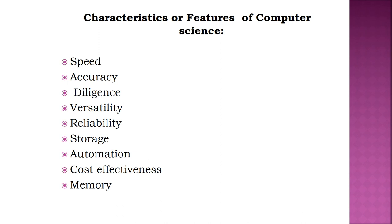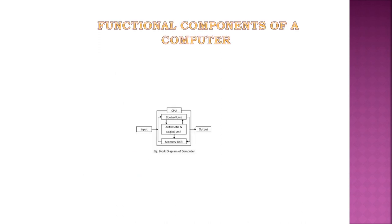To summarize, the different characteristics of computers are: speed, accuracy, diligence, versatility, reliability, storage, automation, cost-effectiveness, and memory. After seeing these characteristics, let us move on to the next topic — the Functional Components of Computers, also called the Block Diagram of a Computer.